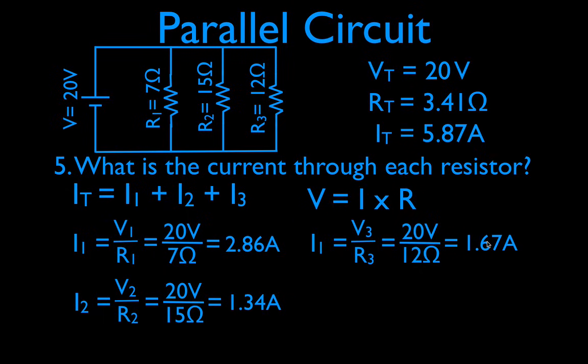So once again, we did the voltage, the resistance, and the current totals. Then we got the voltage across each resistor, then we used the current rule along with Ohm's law to get the current through each resistor. That's five steps — write down the rules and equations, follow the steps, plug the values in, get the answers with the correct units, and check that everything makes sense.